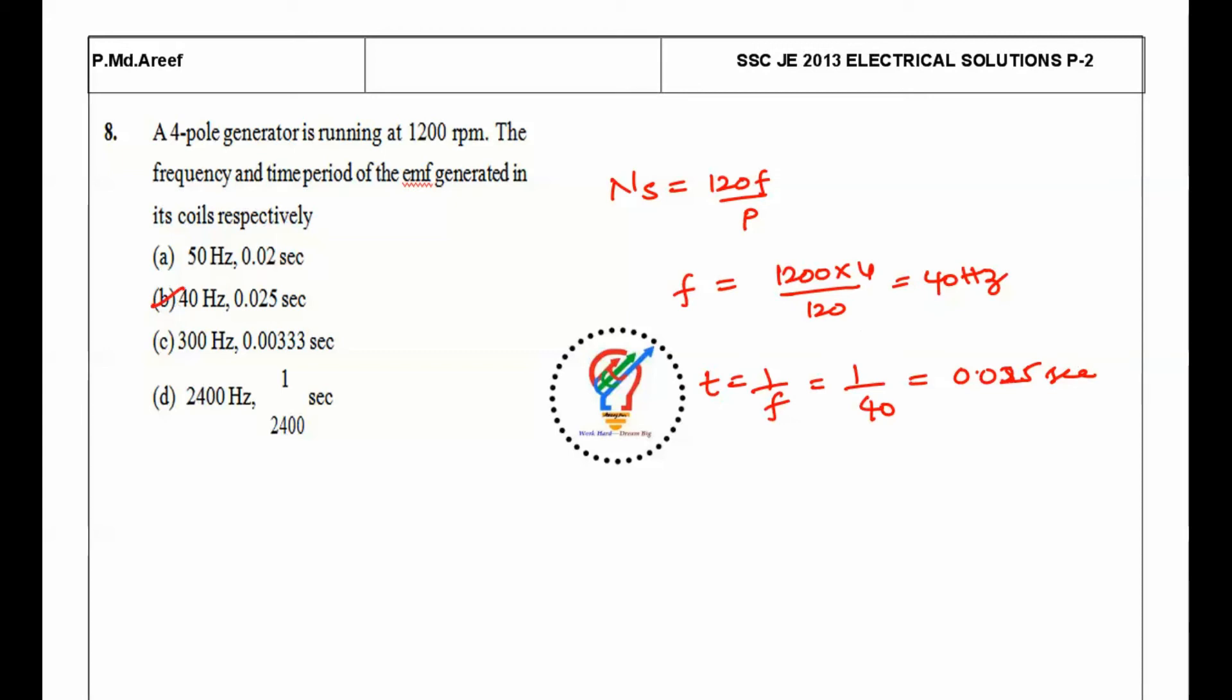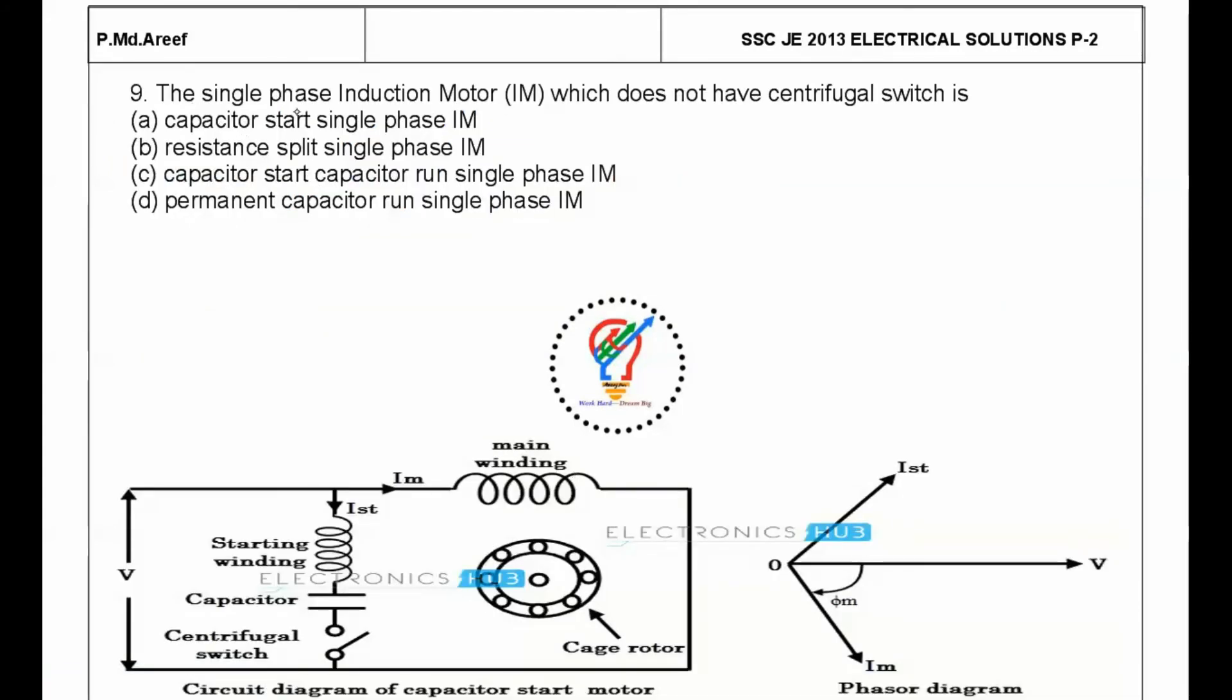Next question: the single-phase induction motor which does not have a centrifugal switch. Here's the circuit diagram for a capacitor start and capacitor run motor. When the centrifugal switch is not there, it's permanently connected. Once it is permanently connected, it acts as a permanent capacitor run single-phase induction motor. Here we are connecting the capacitor to create the phase difference between the main winding and starting winding.